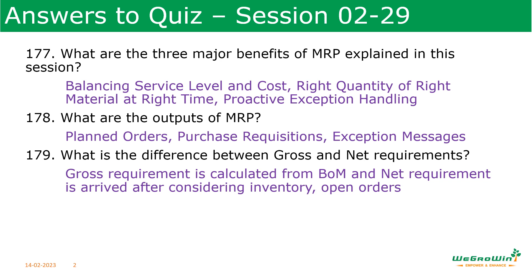What is the difference between gross requirement and net requirement? Gross requirement is calculated from the bill of material as-is to produce a product. Net requirement is arrived at from gross requirement, and then available stock and open orders are reduced to arrive at how much is to be produced or procured from outside.